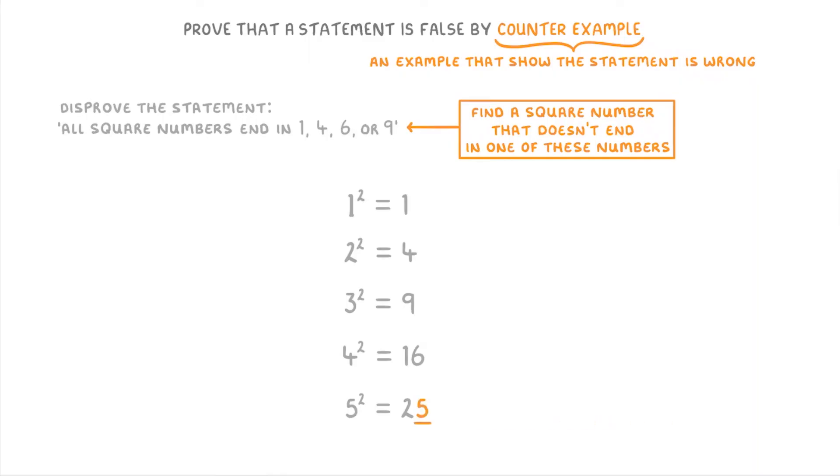Because the last digit of 25 is a 5, rather than a 1, 4, 6, or 9. So the example of 25 disproves the statement.